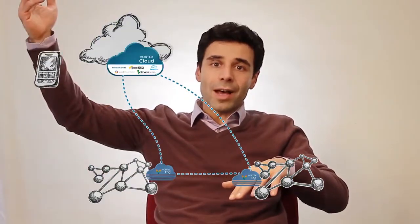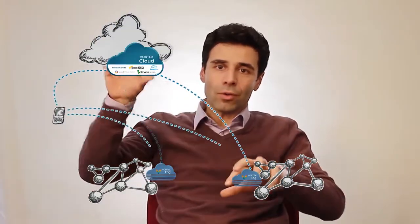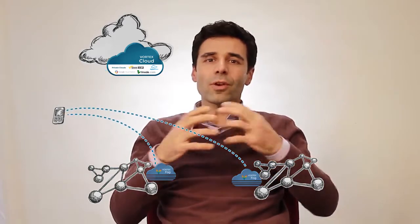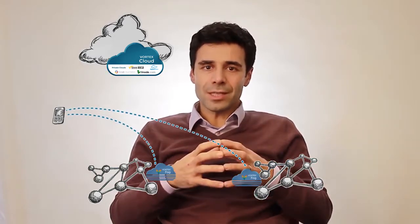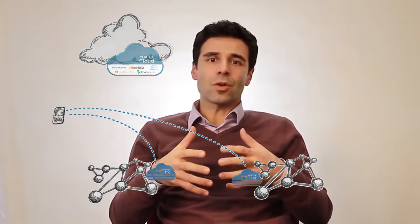Vortex provides a data fabric that at any point in your system — from the fog, across fog, from the fog to a cloud, or to a device communicating with fog from the cloud — allows you to forget the details about connectivity and networking technology, and just focus on data. Focus on the data that matters to you, and Vortex will ensure that this data is distributed and shared in the most effective manner permitted by the current network connectivity and technology.